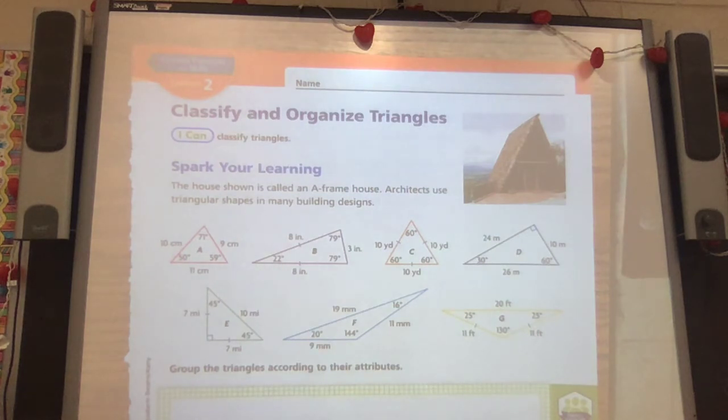So we talked about polygons. Polygons are any figure that has straight sides that are closed. Any closed straight-sided figure is a polygon. So a triangle is one type of polygon that we have.